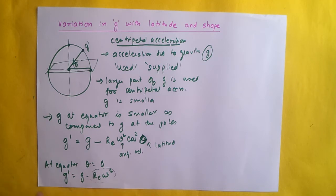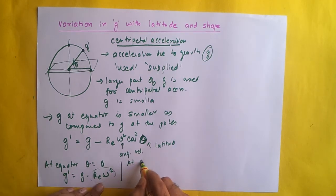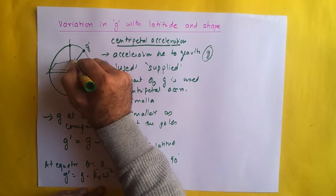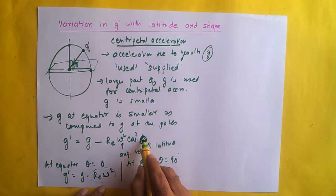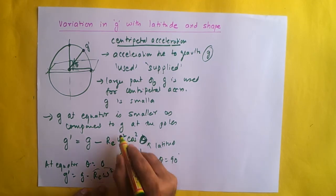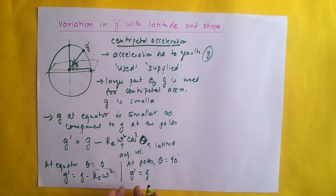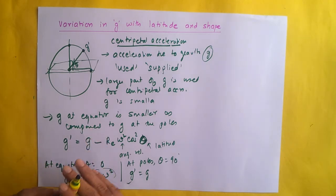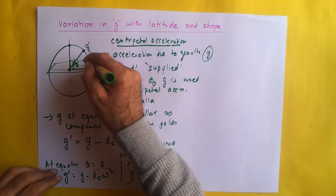So g dash becomes smaller at the equator. Whereas at the poles theta is 90 degrees, so cos 90 is zero, and g dash equals g minus zero, which means g dash equals g. Therefore we get a larger value of g dash at the poles. This is how the value of g changes with latitude as we go from the equator to the poles.